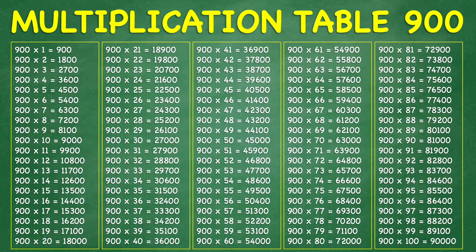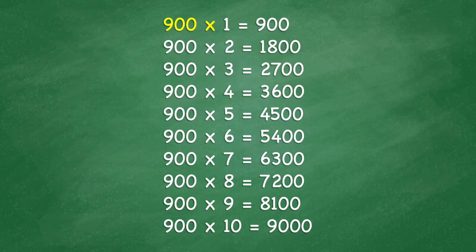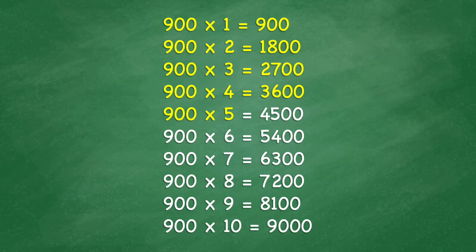Multiplication table 900. 900 times 1 equals 900. 900 times 2 equals 1,800. 900 times 3 equals 2,700. 900 times 4 equals 3,600. 900 times 5 equals 4,500. 900 times 6 equals 5,400. 900 times 7 equals 6,300.